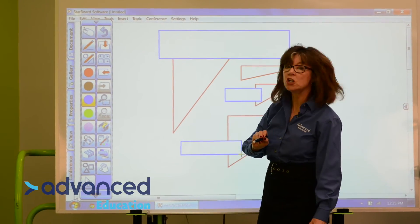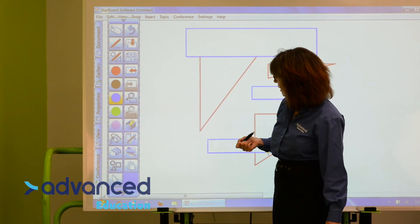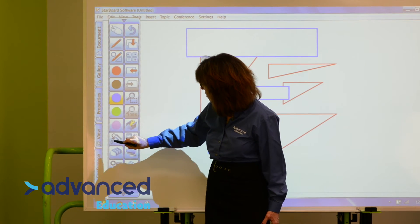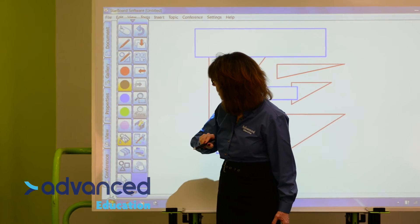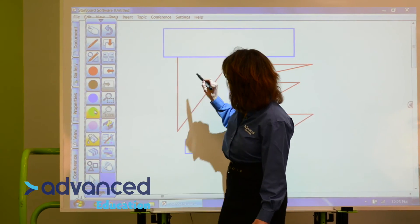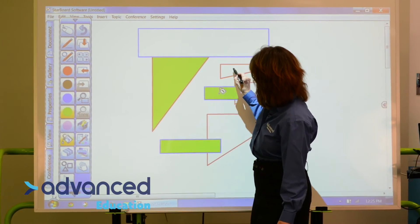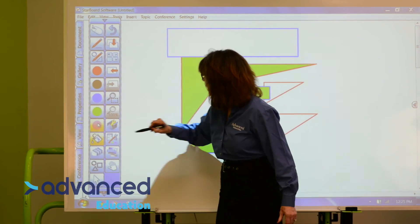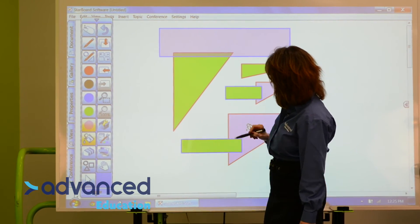Looks like a piece of modern art, doesn't it? Now I'm going to fill them. So what I want to do for that is go to the paint bucket here. Click on the paint bucket and choose a color. Just click inside. Change to pink, etc.